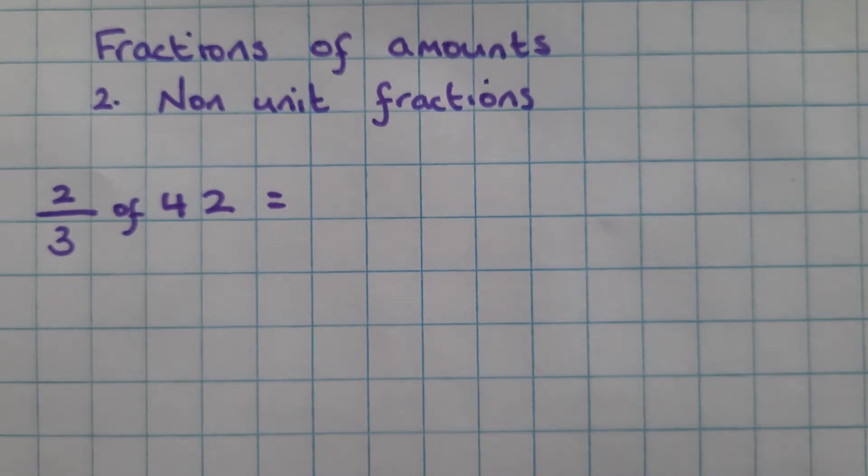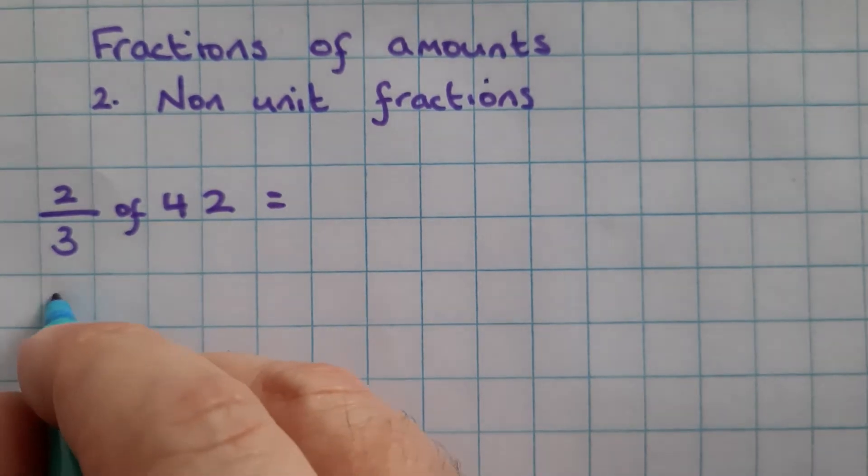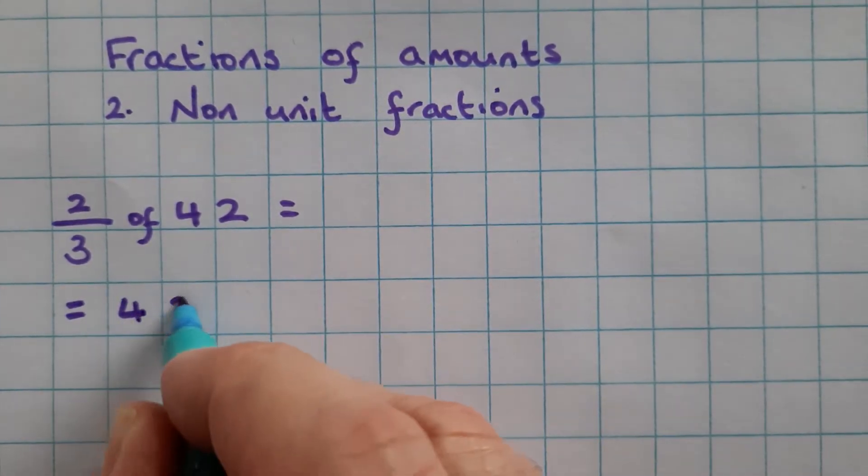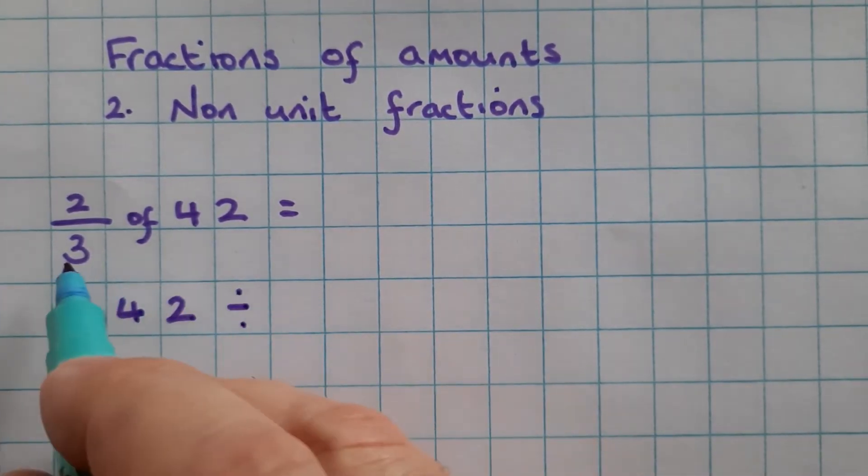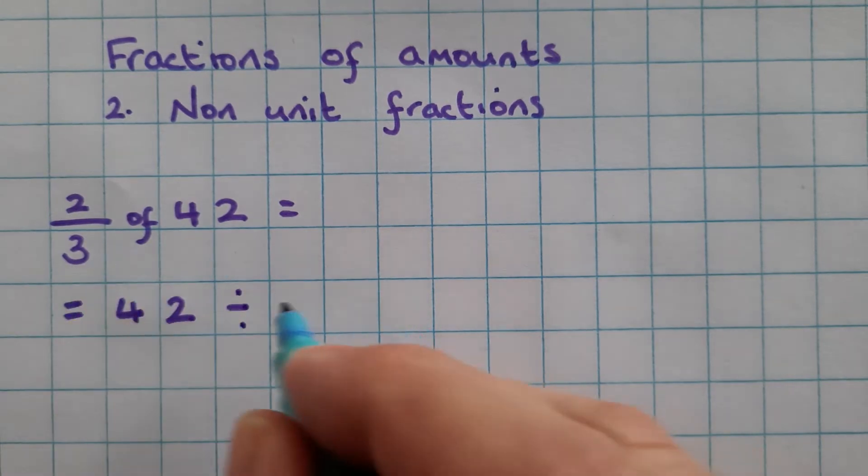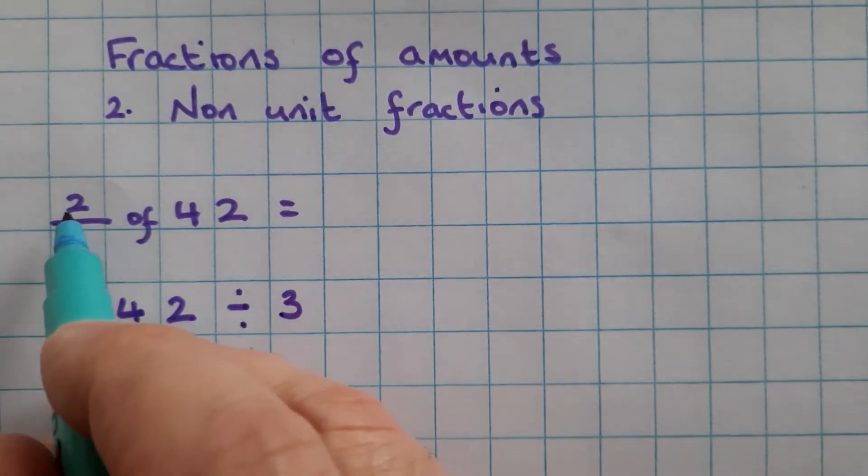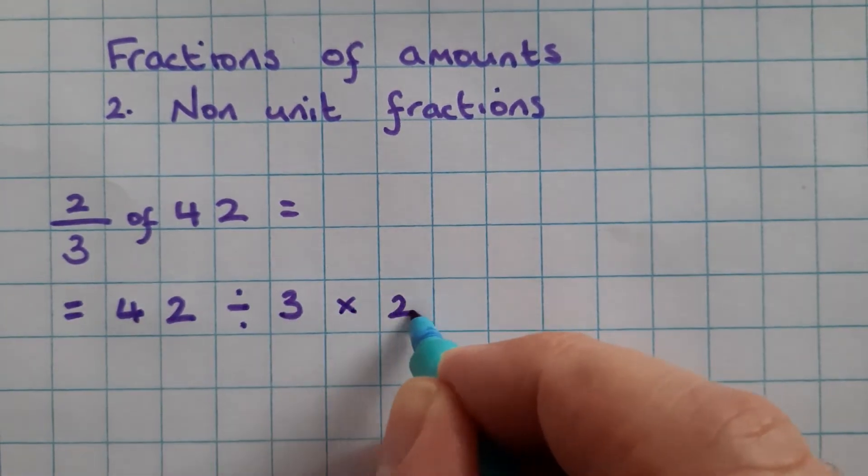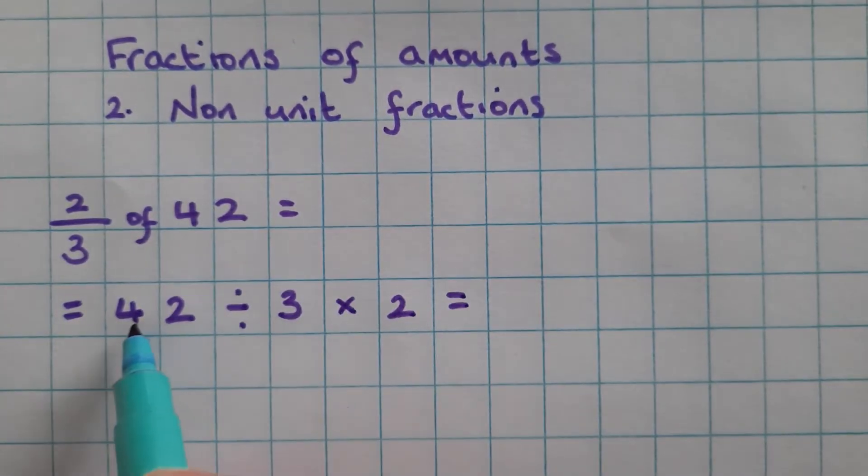So here we have the question two-thirds of 42. Now two-thirds of 42 is the same as 42, the amount, divided by the denominator, 3, but multiplied by the numerator, 2, which gives us a two-stage problem to solve.